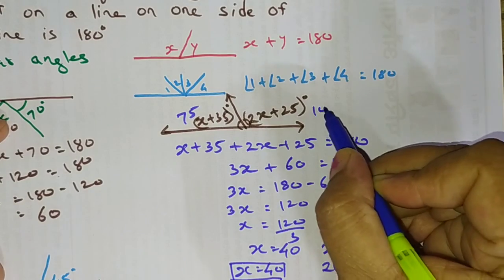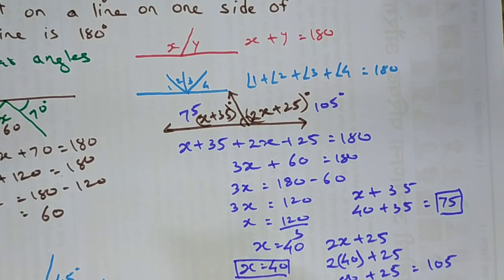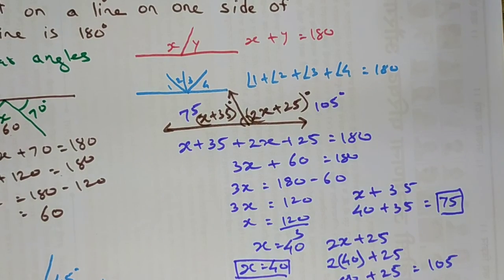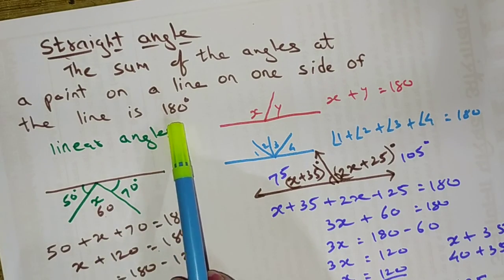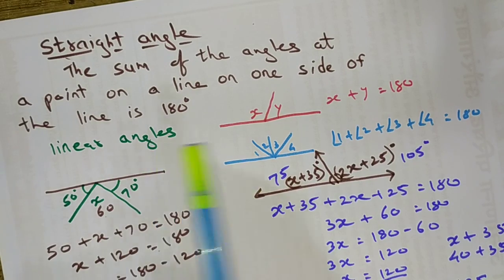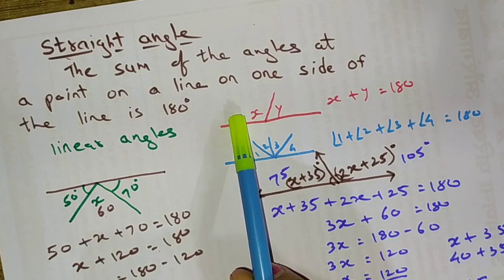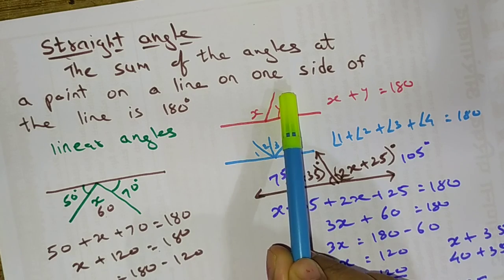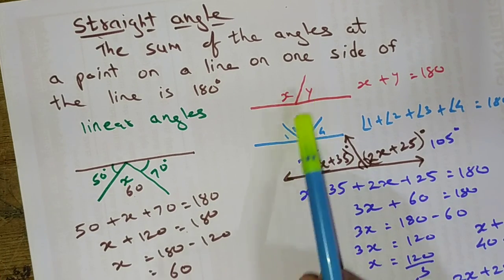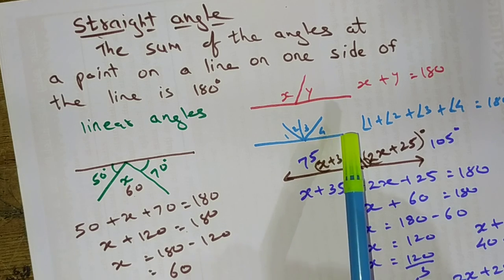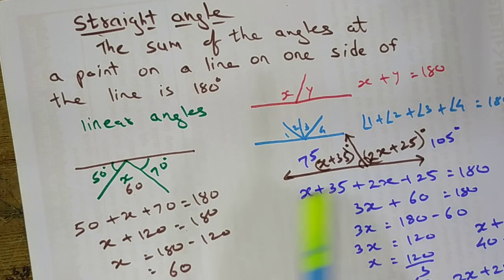So one angle is 75 degrees and the other is 105 degrees. We have seen examples from simple to difficult level and have completely studied the straight angles. They sum up to 180 degrees and are also called linear angles. There may be 2 angles or many angles on either side — they all sum to 180.